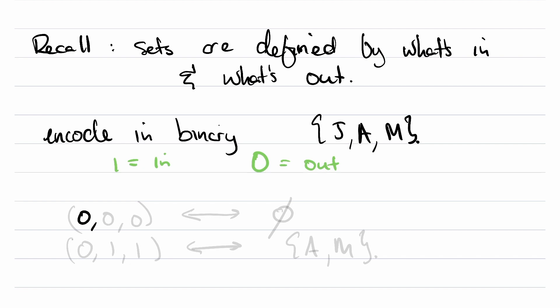So we're starting with the set that contains these three letters J, A, and M. And one is going to mean in and zero is going to mean out. So what does zero comma zero comma zero mean? Well, it means J is out, A is out, and M is out. So this corresponds to the empty set since J, A, and M are not in there. We can also play around with other things. This string 0, 1, 1 will correspond to J being out, A being in, and M being in. And so this corresponds to the set A comma M.